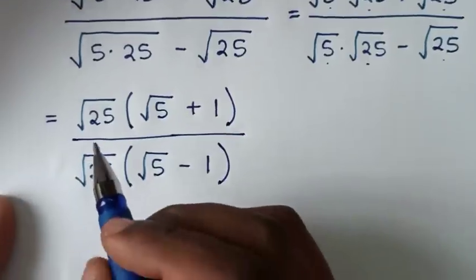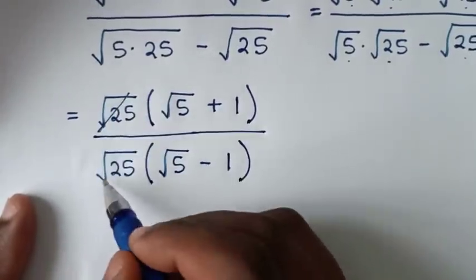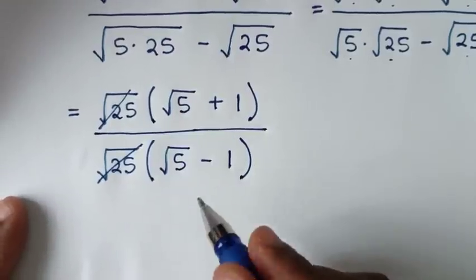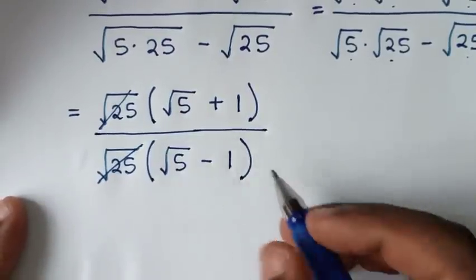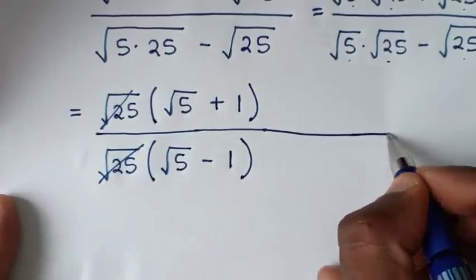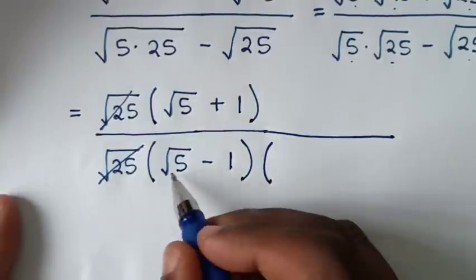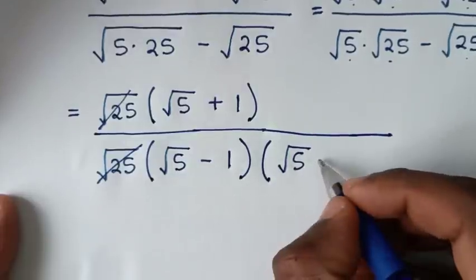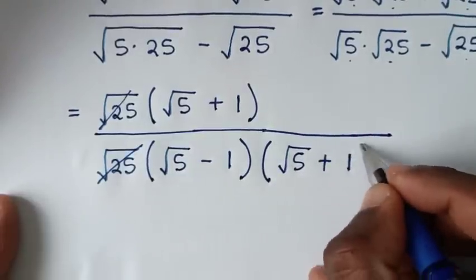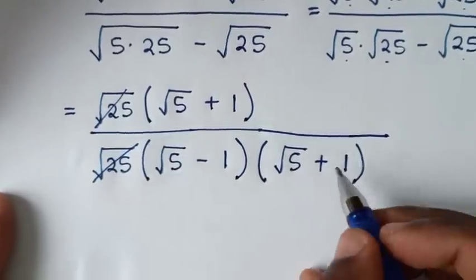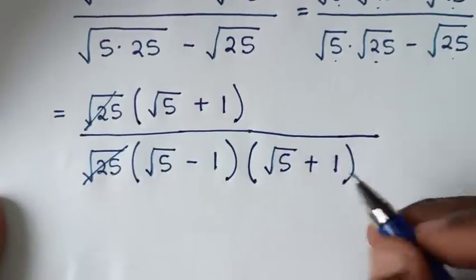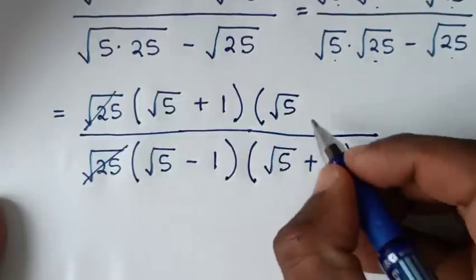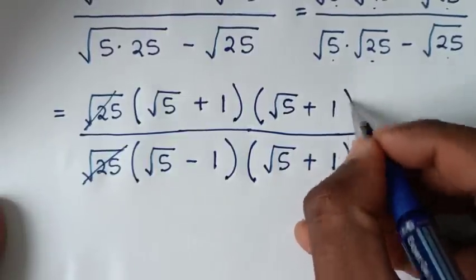The square root of 25 cancels, leaving (square root of 5 plus 1) over (square root of 5 minus 1). We then multiply numerator and denominator by (square root of 5 plus 1) to rationalize.